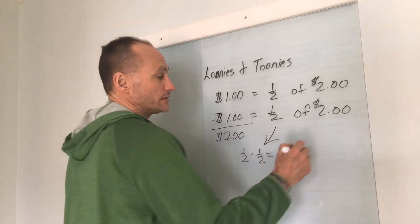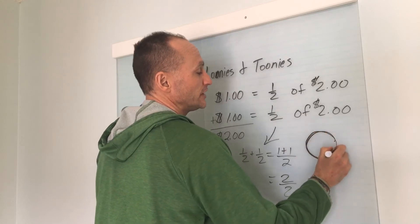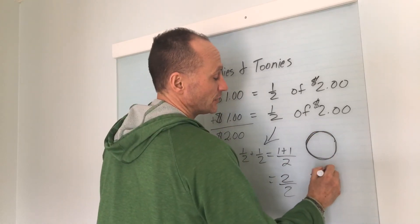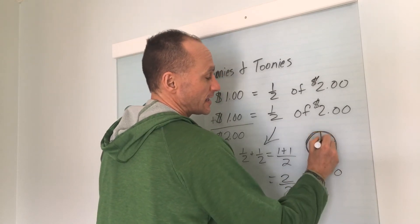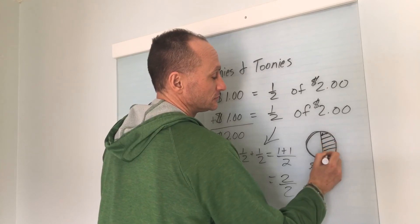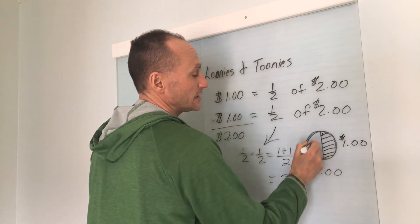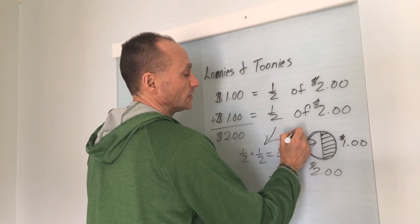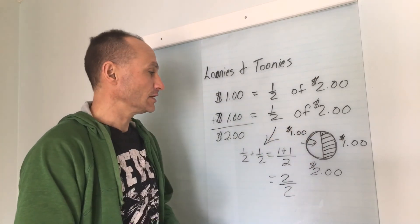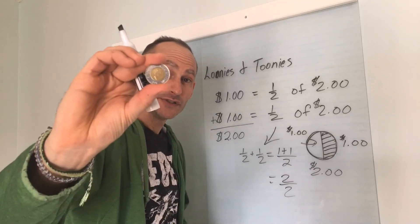Another way to draw it would be this way. If we consider this a toonie, this value is worth two dollars. Half of it would be one dollar, and the other half would also be one dollar. So there's an example of fractions in real-world situations related to loonies and toonies.